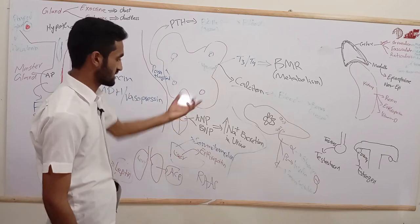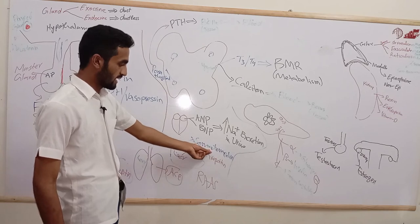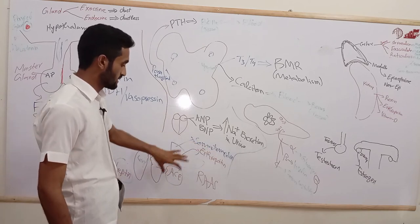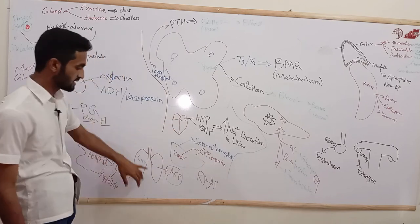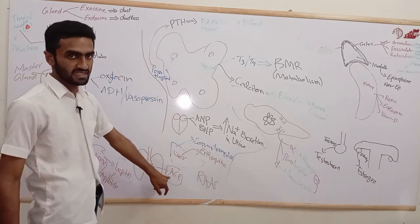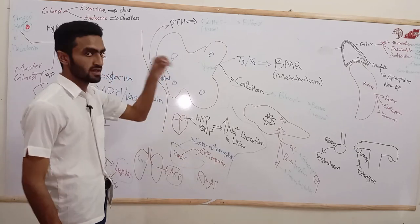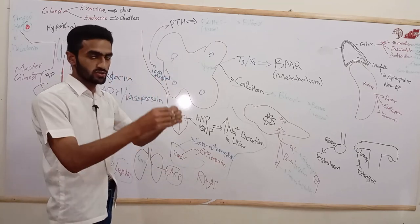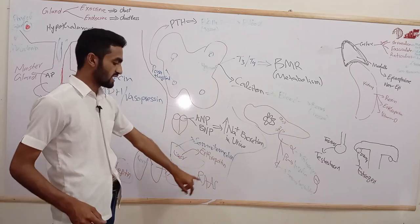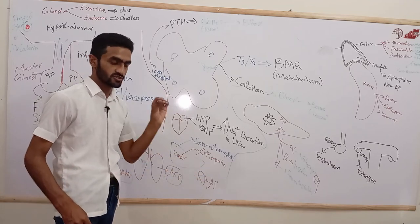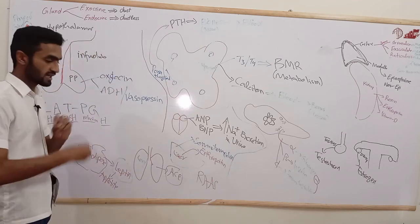The liver secretes erythropoietin and somatomedins. The lungs secrete ACE (angiotensin-converting enzyme), which converts angiotensin I into angiotensin II in the renin-angiotensin-aldosterone system.